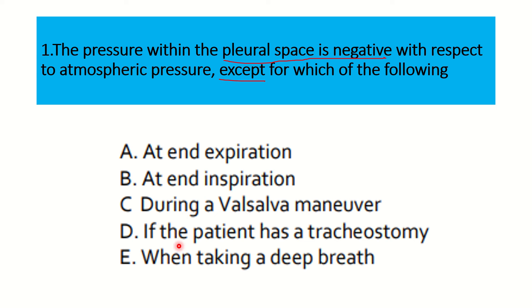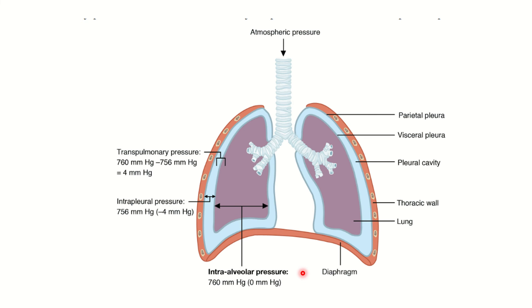Here is a picture showing atmospheric pressure entering the trachea, followed by the two bronchi and into the lungs. Outside the lungs, we can see two layers — between these two layers there is a space, which is the pleural space. The layer covering the lungs is the visceral pleura, and the outer layer attached to the chest wall is the parietal pleura.